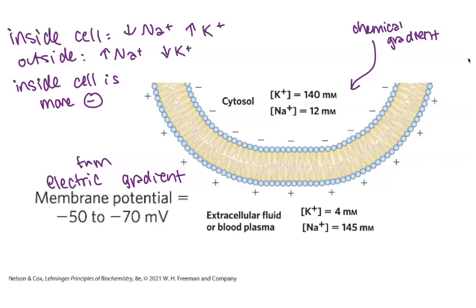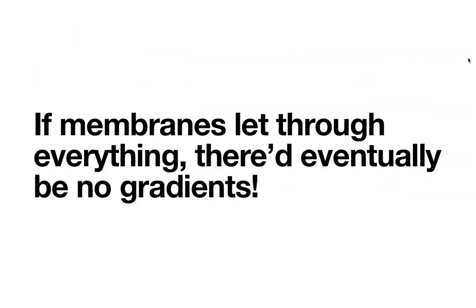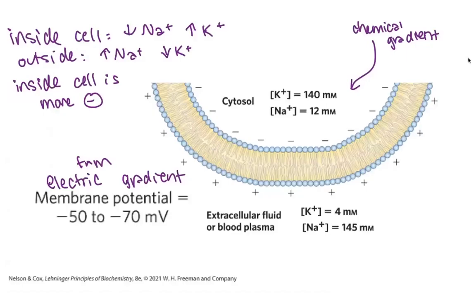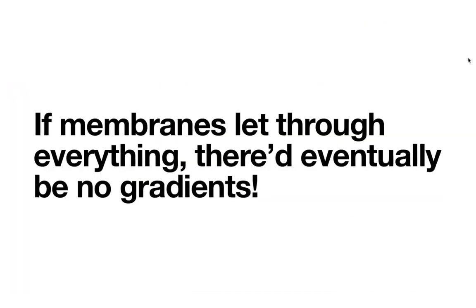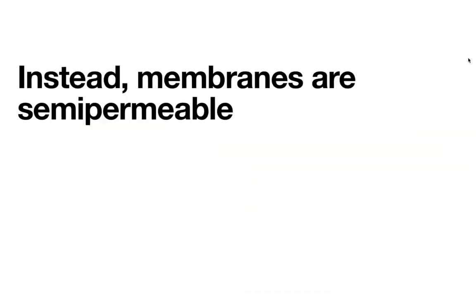If all things could move freely, there'd eventually be no gradients — diffusion would equalize concentrations, charges would neutralize, and there'd be no membrane potential. So clearly something is going on — our cells are actually working to keep things out of balance. Membranes are what we call semi-permeable, meaning partially permeable. Things that can get through are called penetrating solutes; things that can't are non-penetrating.